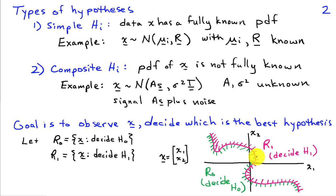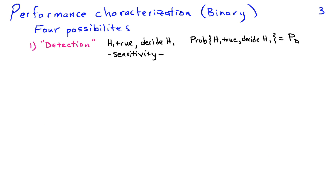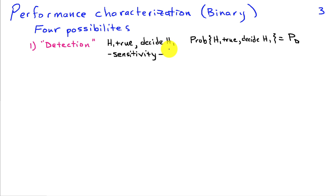We like to partition the space so that we obtain good performance, so we need to characterize the performance of a decision rule. Sticking with the binary case, there are four possibilities. The first is called detection — the traditional electrical engineering term — which refers to the scenario where H1 is the true hypothesis and we decide H1. We characterize this as the probability that we decide H1 when H1 is true, called P sub D, or the probability of detection.